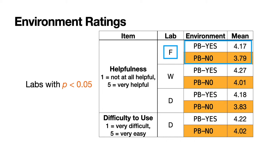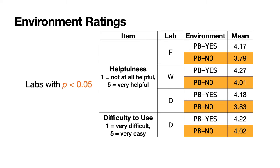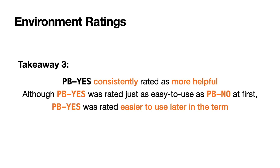The mean rating from students using PBS is higher than that from students using PBNO. We collected such ratings from labs F, W, and D. For helpfulness, this pattern exists in all of the labs. For difficulty, statistical significance only exists in lab D, the last lab in the study. We found that PBS was consistently rated as more helpful for understanding the lab, and although PBS was rated just as easy to use as PBNO in the earlier labs, PBS was rated as easier to use later in the term.